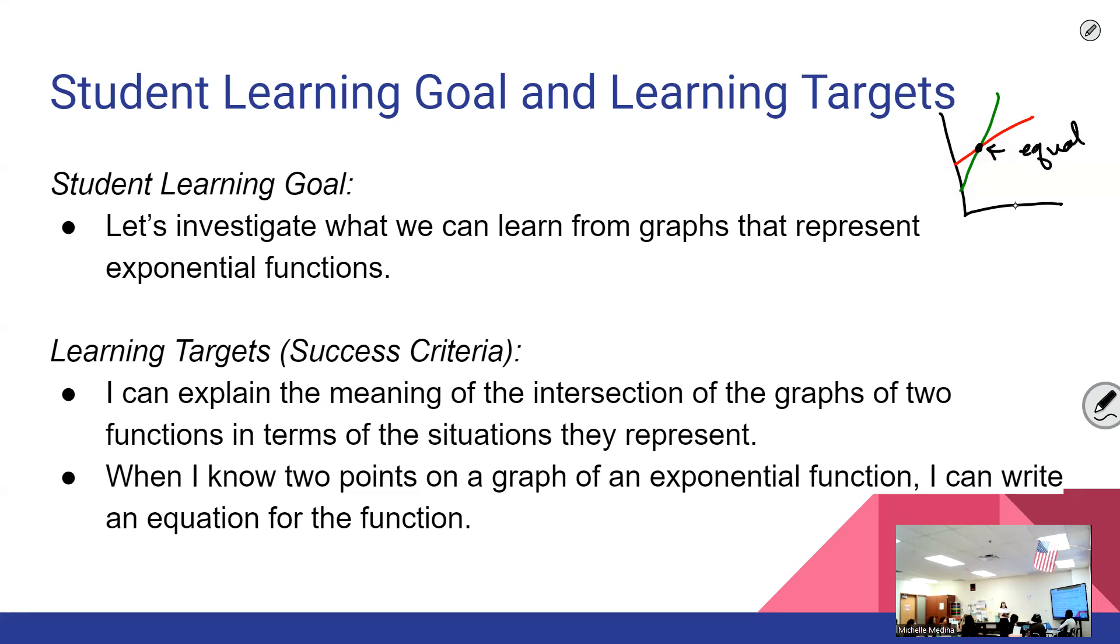So whatever situation is going on, say that this green line is Company A and this red one is Company B, whatever is going on they have an equal amount at where they intersect. Is it about this? Okay, so where they intersect is where they are equal, related back to whatever situation going on.